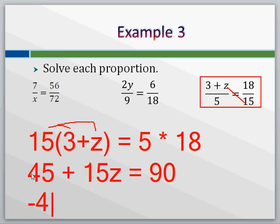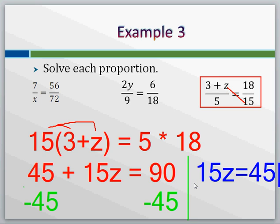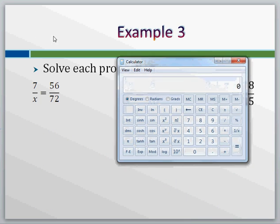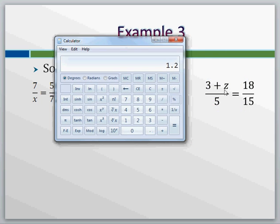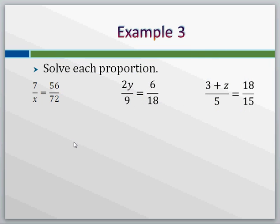If we subtract forty-five from both sides, we are going to wind up with fifteen z equals forty-five. That means that if we divide both sides by fifteen, we wind up with z equals three. Let's check that. Three plus three is six. Six over five and eighteen over fifteen, are those equivalent to each other? Six over five is one point two, eighteen over fifteen is also one point two, so yes, our z does need to be three. Plugging that in, it checks out.